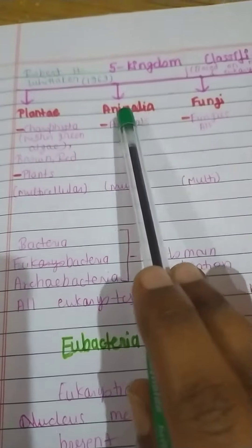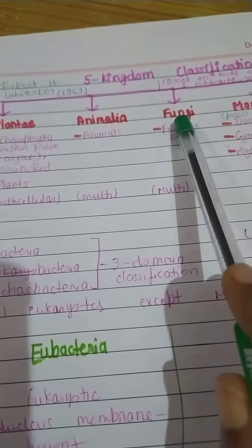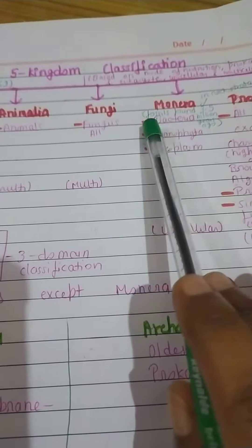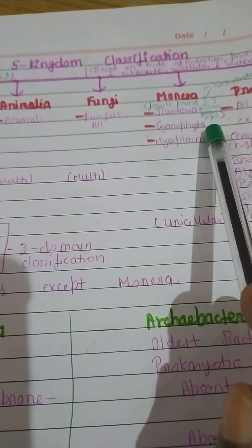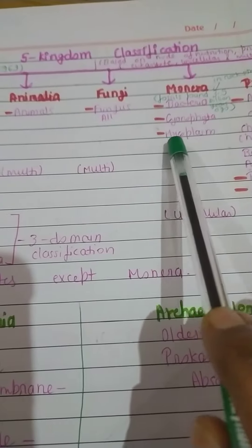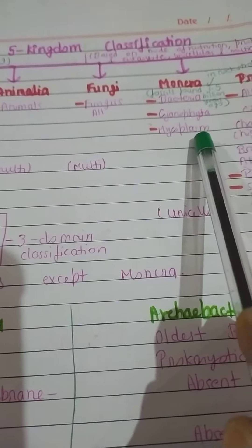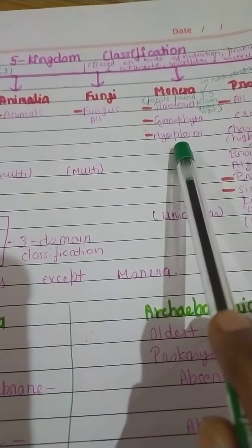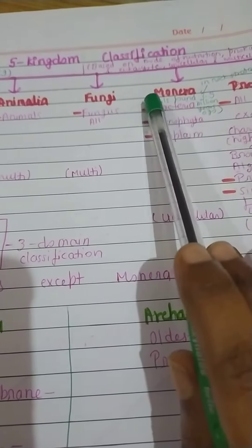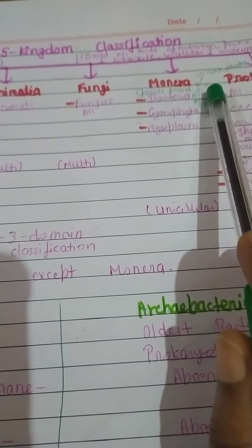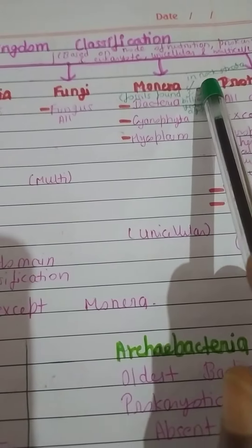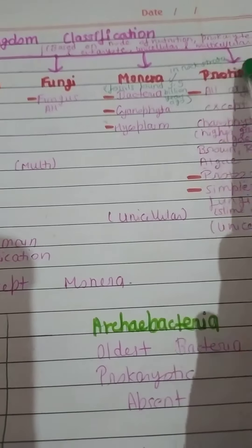Animalia includes all animals, and Fungi includes all types of fungi. In Monera, we have bacteria. Cyanophyta is also called blue-green algae. Mycoplasma also comes under Monera — mycoplasma is also called PPLO, which stands for Pleuro Pneumonia Like Organisms. The fossils of bacteria were found 3.5 billion years ago in rock strata.